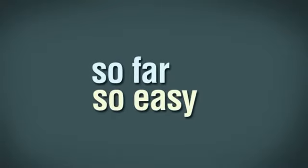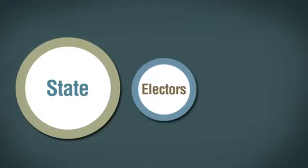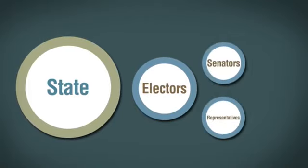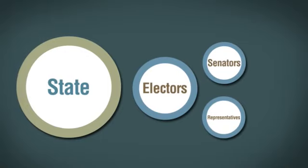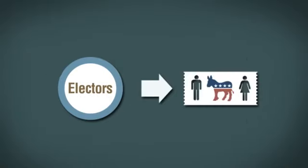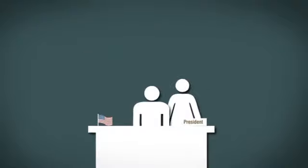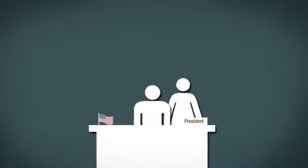When it comes to election day, the public go to the polls to vote for one presidential ticket. However, the public don't vote directly for their choice of president. Instead, a system called the Electoral College is used. Each state is allocated a number of electors that will make the final choice. A state has the same number of electors as it does senators and representatives. In most states, all the electors will vote for the presidential ticket which received the most support in the public vote. Finally, the presidential ticket with the most electoral college votes becomes president and vice president of the United States of America.